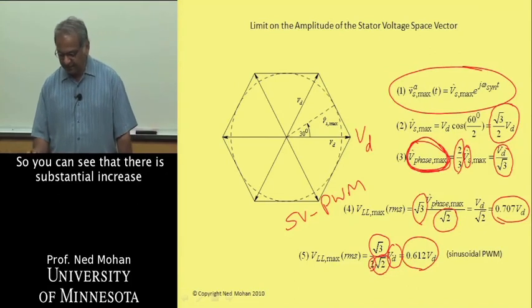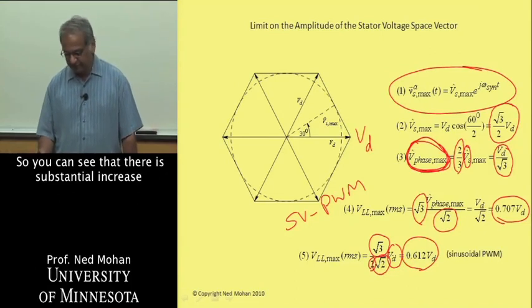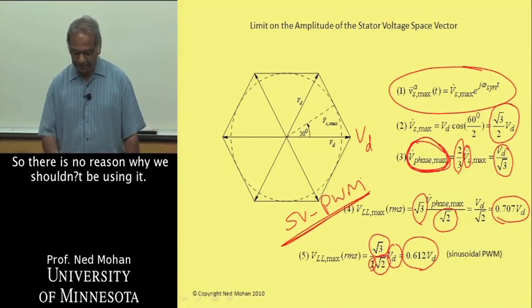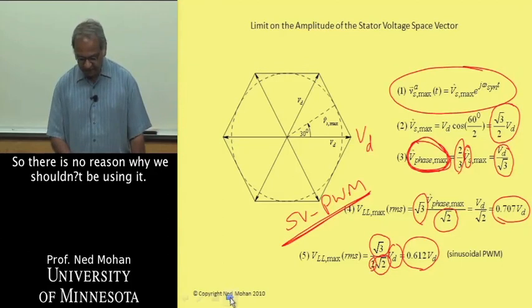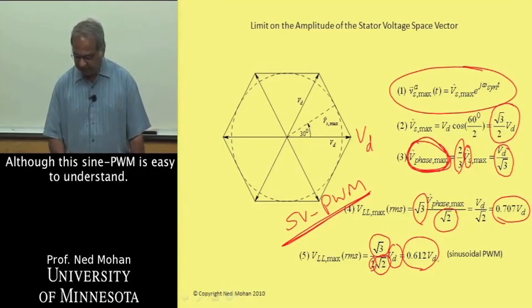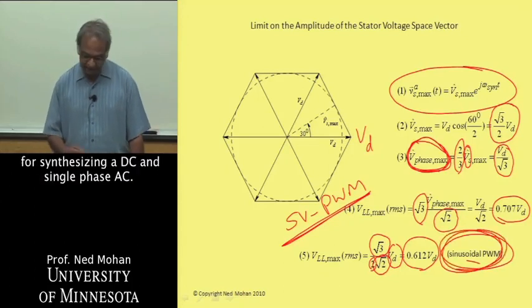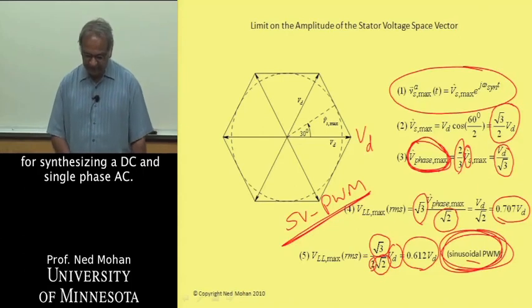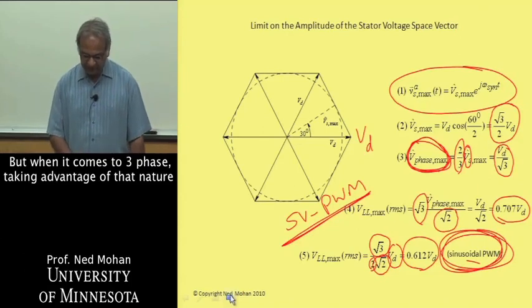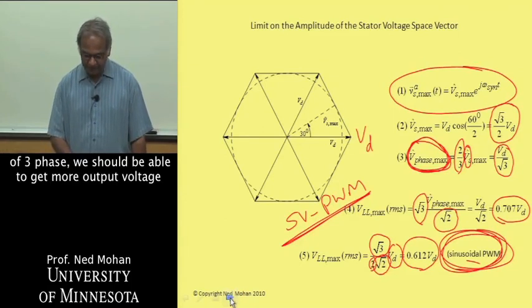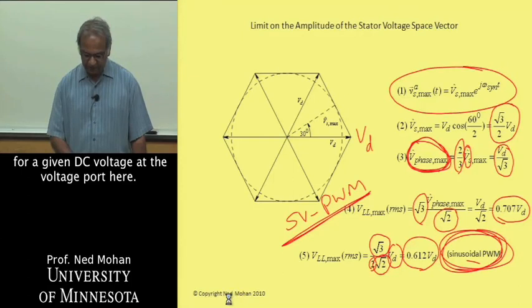You can see that there is substantial increase in the maximum voltage that we can get using this SV PWM. There is no reason why we shouldn't be using it, although the sine PWM is easy to understand, it's a sort of extension of what we see for synthesizing DC and single phase AC. But when it comes to three-phase, taking advantage of that nature of three-phase, we should be able to get more output voltage for a given DC voltage at the voltage port here.